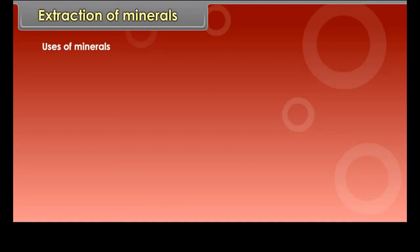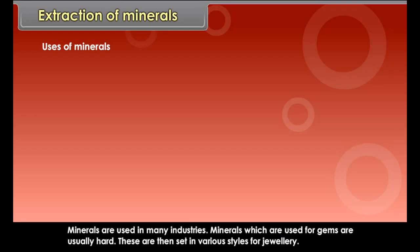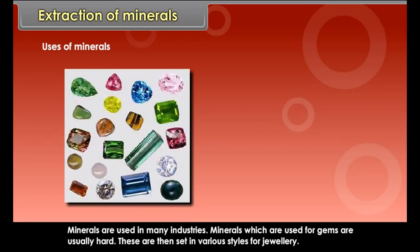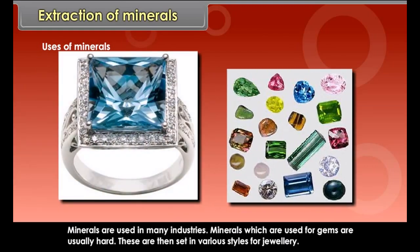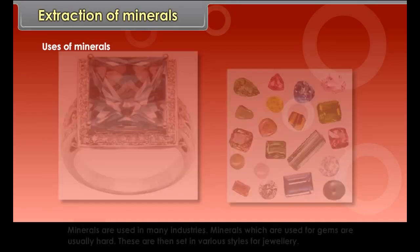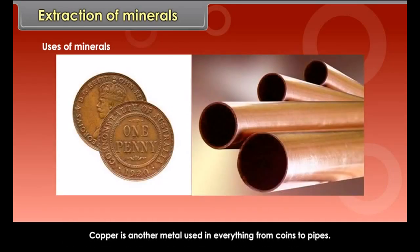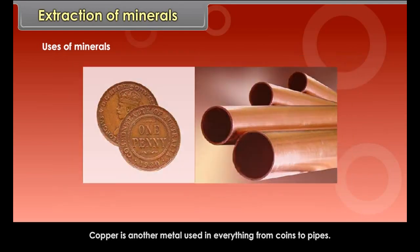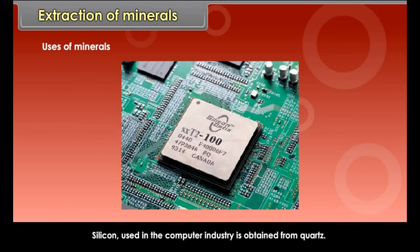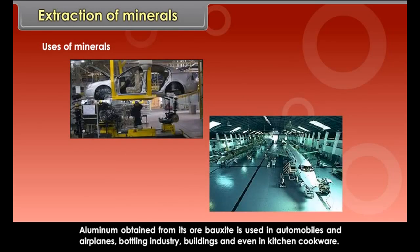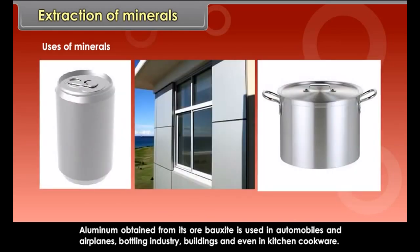Uses of minerals. Minerals are used in many industries. Minerals which are used for gems are usually hard. These are then set in various styles for jewelry. Copper is another metal used in everything from coins to pipes. Silicon used in the computer industry is obtained from quartz. Aluminium obtained from its ore bauxite is used in automobiles and airplanes, bottling industry, buildings and even in kitchen cookware.